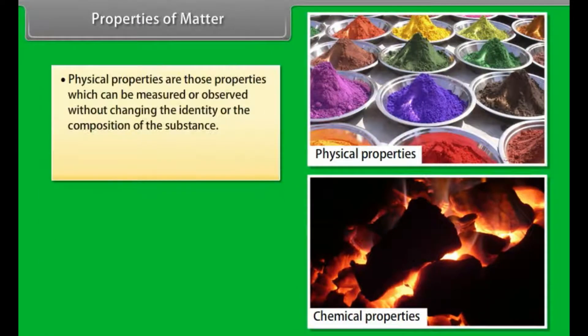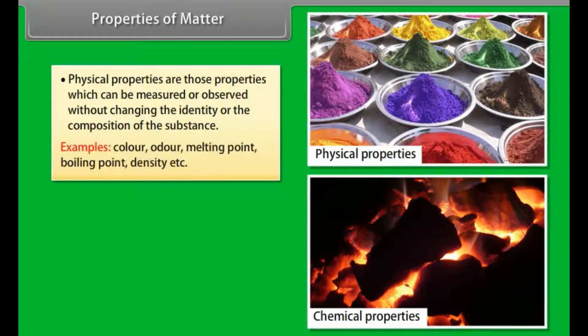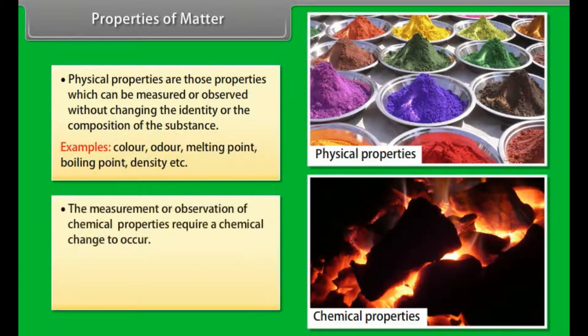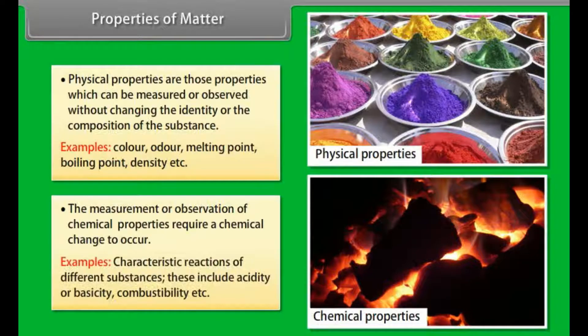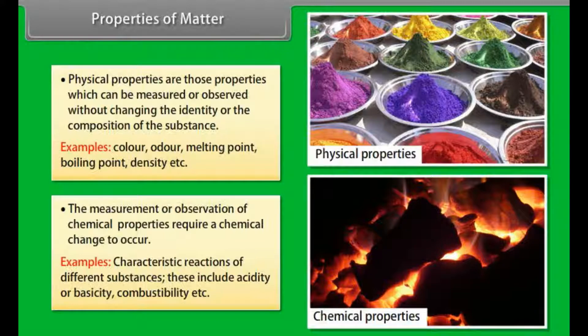Physical properties are those properties which can be measured or observed without changing the identity or the composition of the substance. Examples: color, odor, melting point, boiling point, density, etc. The measurement or observation of chemical properties requires a chemical change to occur. Examples: characteristic reactions of different substances including acidity or basicity, combustibility, etc.